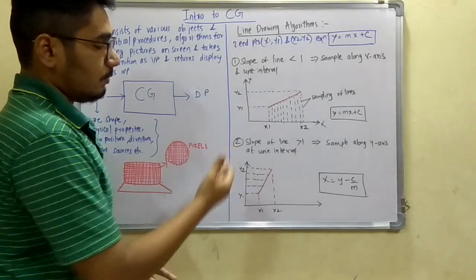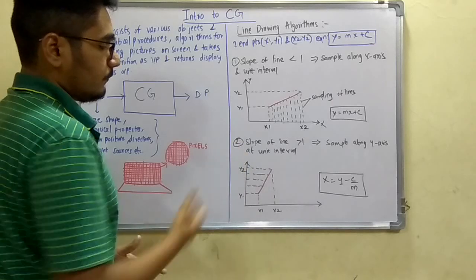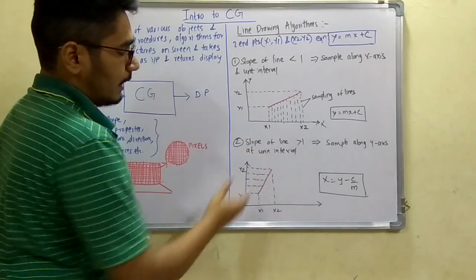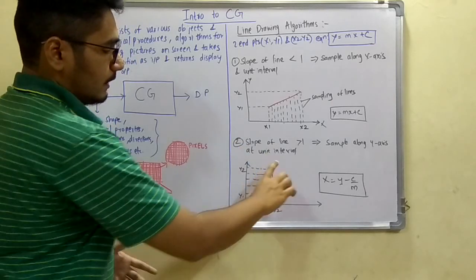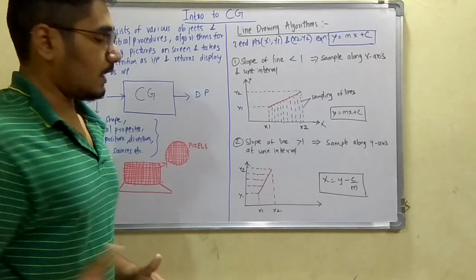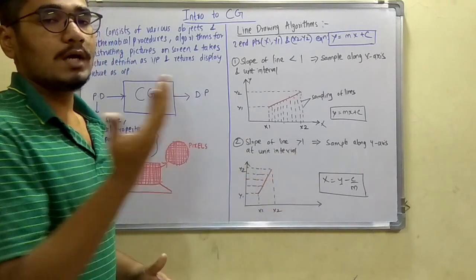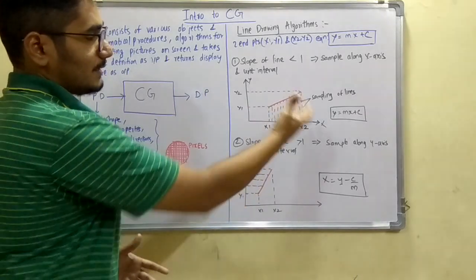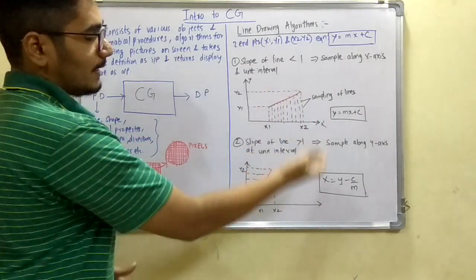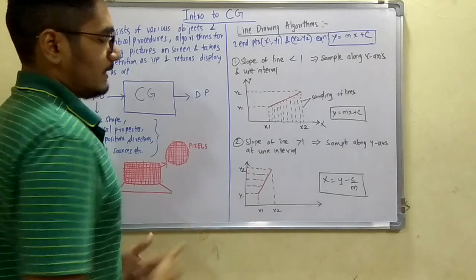In this case we sample along the y-axis. Many sample intervals are in between, and we draw a progressive line depicted by this red color. This is the mathematical equation: x = (y - c) / m, just interchanging the above equation to get the intercept for the x-axis.